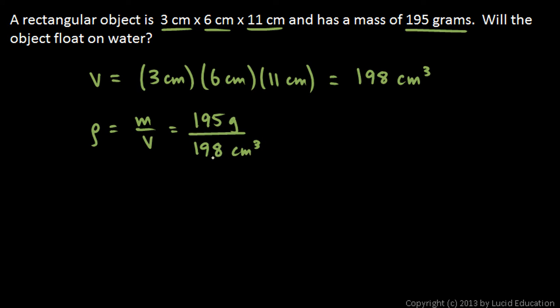Now you don't actually have to do this calculation. You should be able to look at this and see that the numerator is a little bit smaller than the denominator, so the number is going to come out to be a little bit less than one.